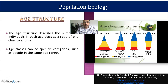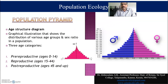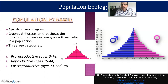Today we are going to discuss one of the most important aspects — the population pyramid. What is actually the population pyramid? The population pyramid is an important concept in which we explain the concept with an age structure diagram. An age structure diagram is a graphical illustration that shows the distribution of various age groups and sex ratio in the population.